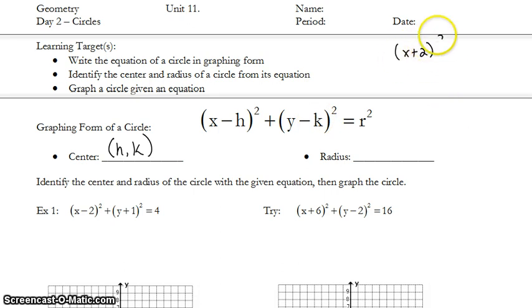If I had x plus 2 quantity squared plus y minus 1 quantity squared equals 4, that's telling me that my x-coordinate of my center is not at 2 because it's minus h, so it's always the opposite. It's at negative 2. And my y-coordinate, since it's y minus k, I have y minus 1. That means k is 1. There's my center.